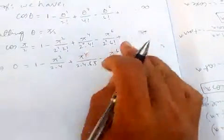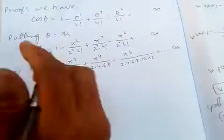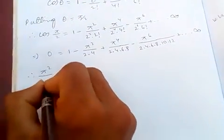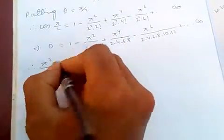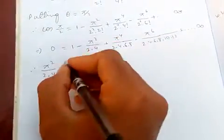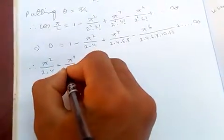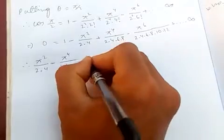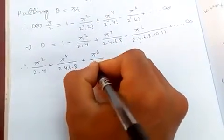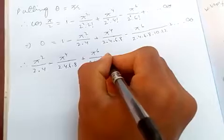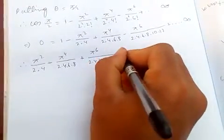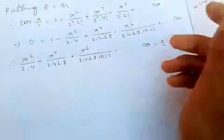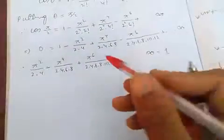Now transferring terms to the left hand side: π²/(2·4) - π⁴/(2·4·6·8) + π⁶/(2·4·6·8·10·12) - and so on up to infinity is just equal to 1. So we have proved the result.